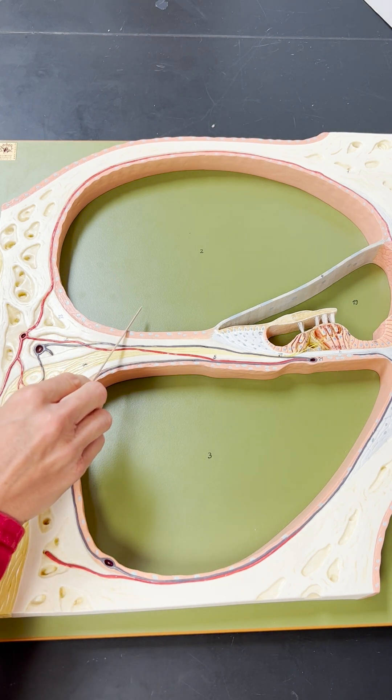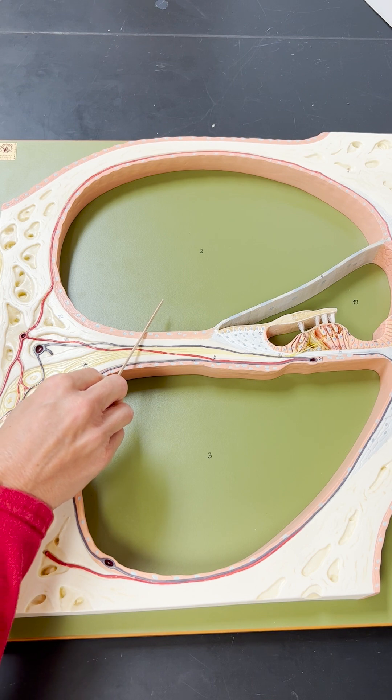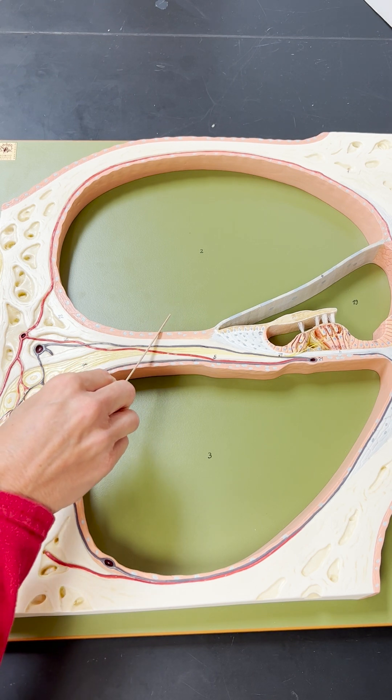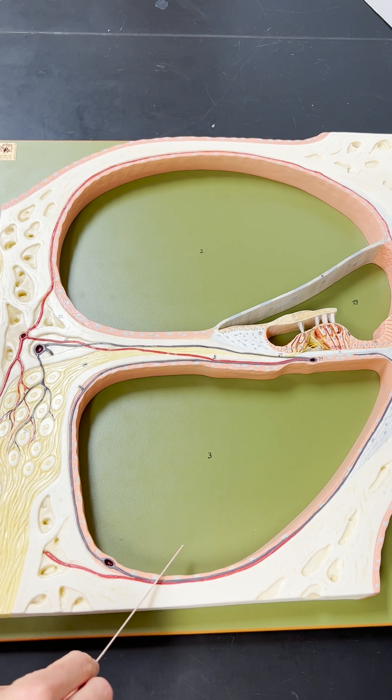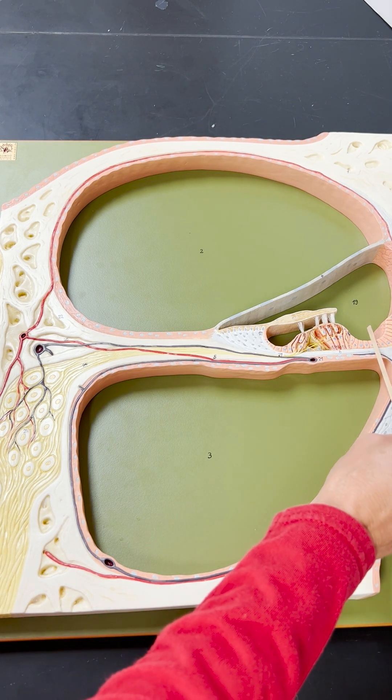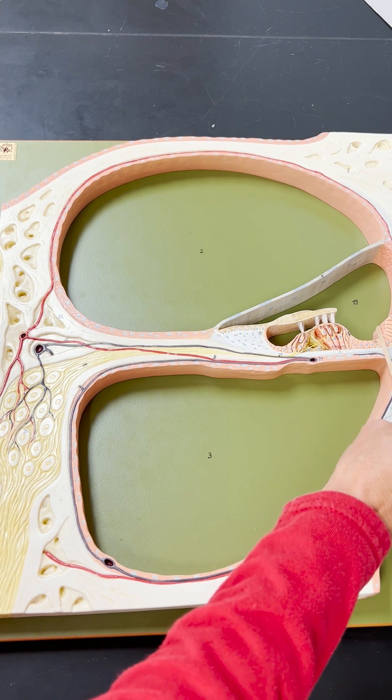The scala vestibuli, the scala tympani, and the third space is called the cochlear duct.